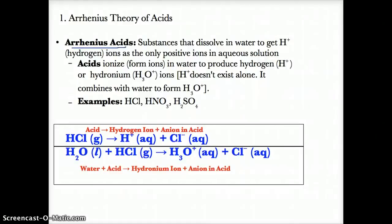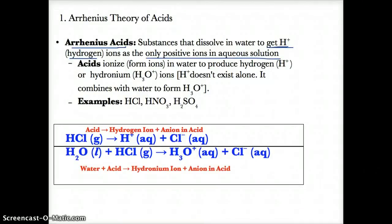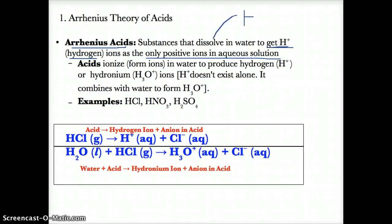Arrhenius acids are substances that dissolve in water to produce H+, or hydrogen ions, as the only positive ions in aqueous solution. When Arrhenius acids dissolve in water, they give out H+. They can also give out a hydronium ion, written as H3O+.